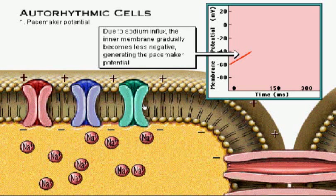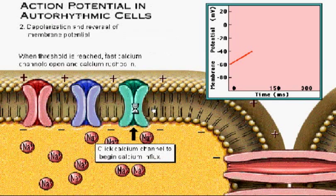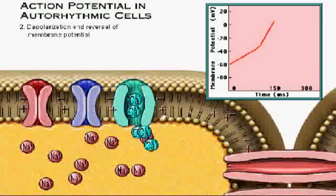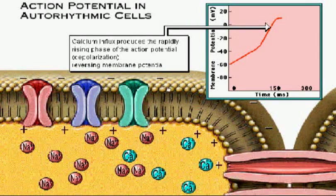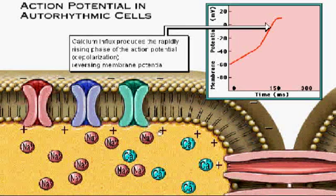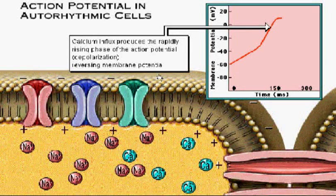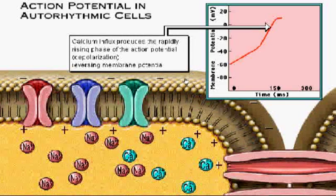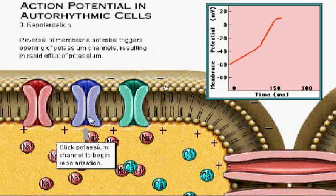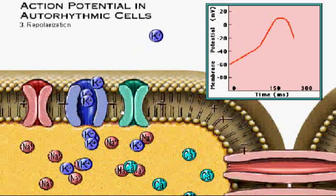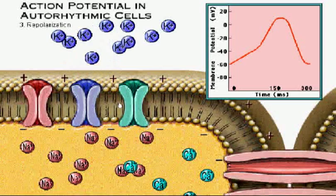Menos 40 milivolts é chamado de potencial de disparo para a célula marca-passo, porque é justamente a menos 40 milivolts que os canais de cálcio se abrirão, fazendo com que uma grande quantidade de cálcio entre na célula, causando a sua despolarização. Com a abertura dos canais de cálcio e a entrada de cálcio na célula, ocorre a despolarização, a milivoltagem da célula atinge valores positivos e a eletricidade da membrana plasmática se altera. Agora o interior da célula está mais positivo quando relacionado ao exterior da célula, que se encontra negativo. Com isso, os canais de potássio se abrem e uma quantidade de potássio sai da célula, fazendo com que a mesma se repolarize.